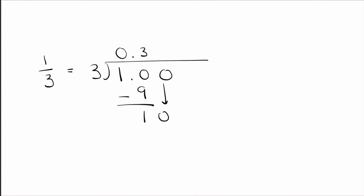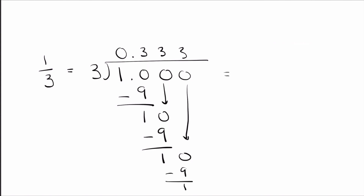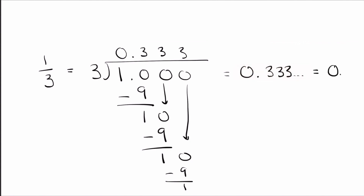That gives me 9 with a remainder of 1. Again, just like in elementary school, add another 0, drop the 0 down, and keep going. 3 goes into 10 three times, leaving a remainder of 1. If you kept doing this, you would keep getting 3s over and over again. So 1/3 is the same thing as 0.3 going on forever — written as 0.3 with a bar over the 3, meaning the 3 repeats forever.